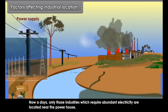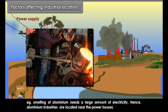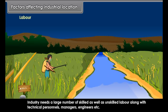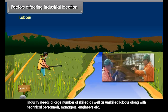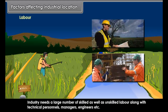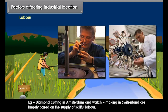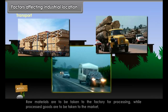Modern industries are largely dependent on power. Industries requiring abundant electricity are located near powerhouses. For example, smelting of aluminium needs a large amount of electricity, so aluminium industries are located near powerhouses. Industries also need a large number of skilled and unskilled labour along with technical personnel, managers, and engineers. For example, diamond cutting in Amsterdam and watchmaking in Switzerland are largely based on the supply of skillful labour.